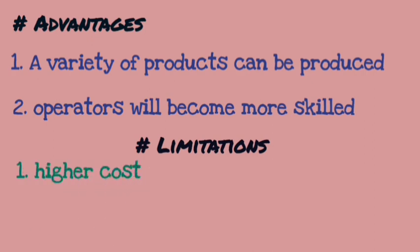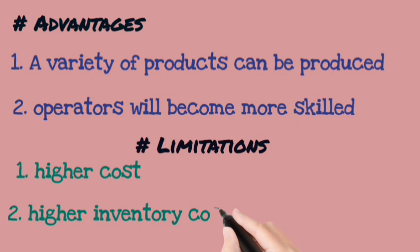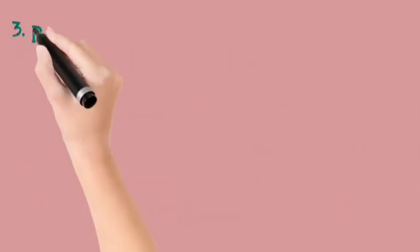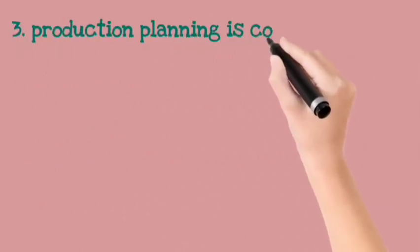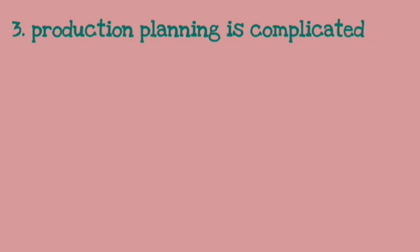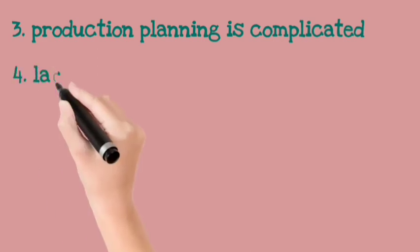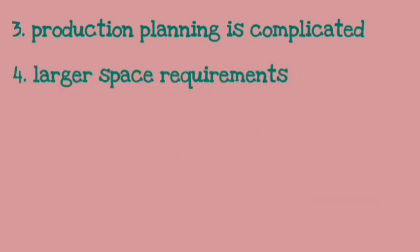Limitations of job shop production: First, the cost is higher because the setup is frequently changing. Second, inventory cost is high — inventory refers to all the goods and items that businesses sell to gain profit. Third, production planning is very complicated. Fourth, space requirement is much more — we need more space.